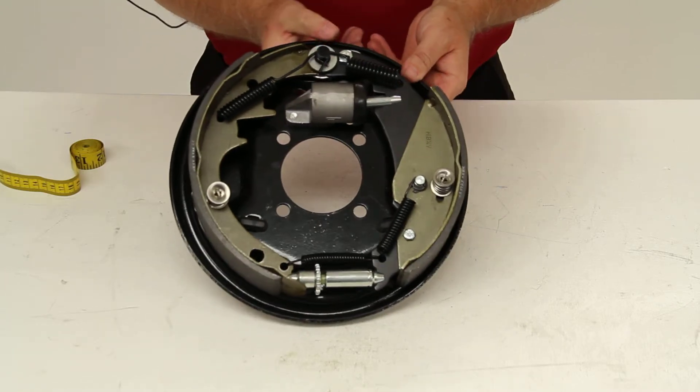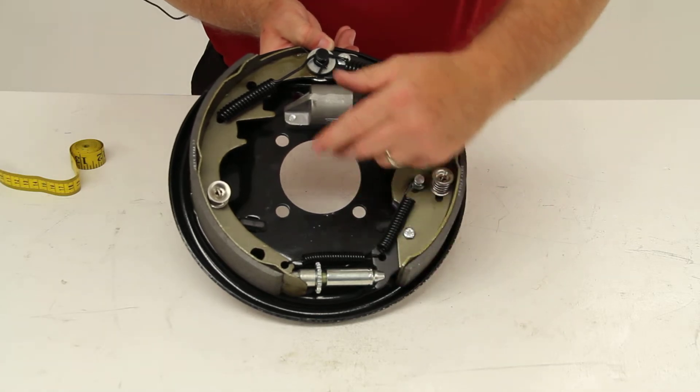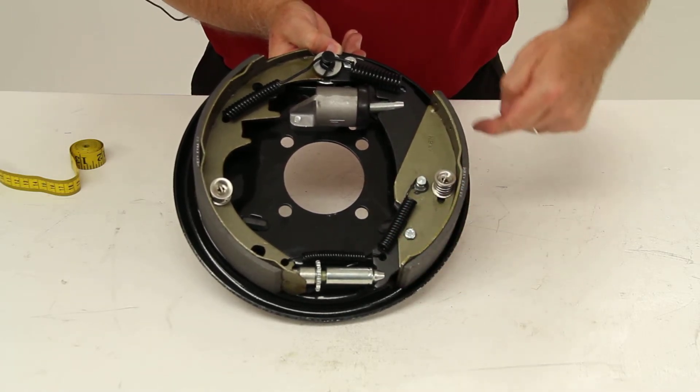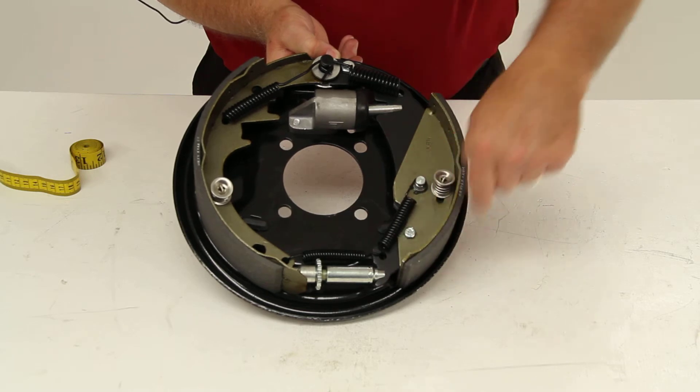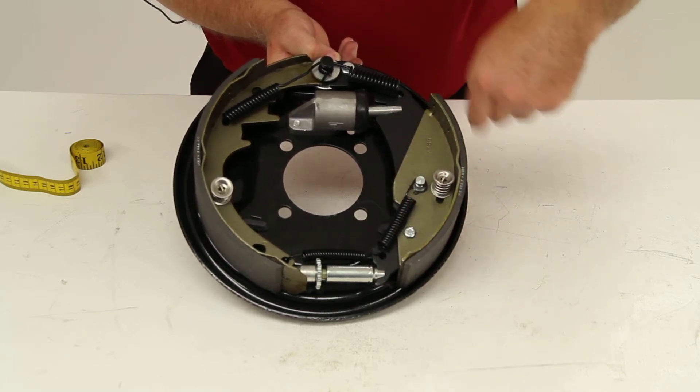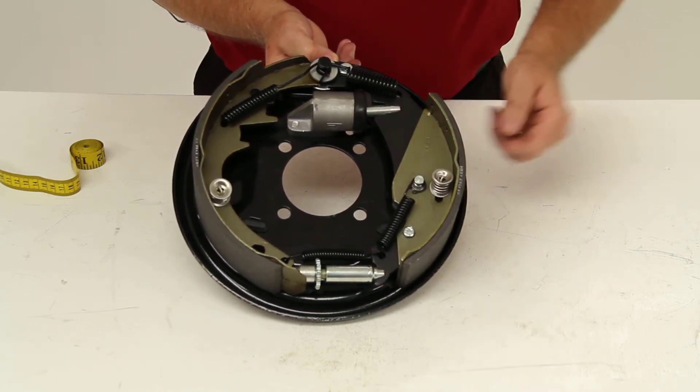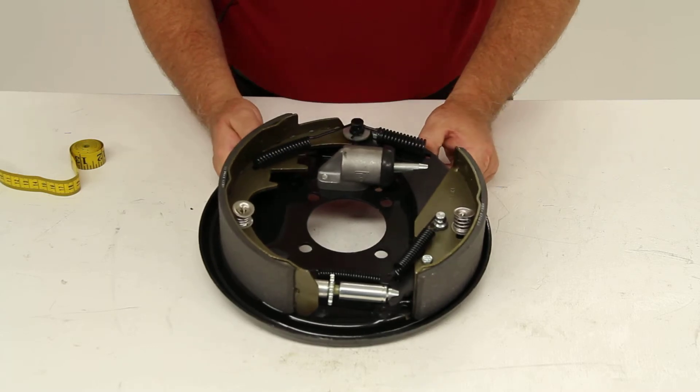Another easy way to tell if this is a free backing brake assembly is the smaller brake shoe will be in a D-shape design. That indicates it's a free backing brake assembly.